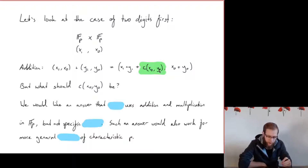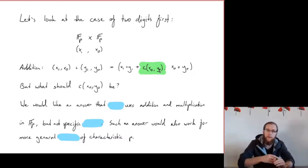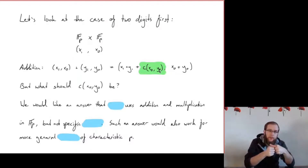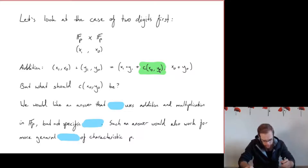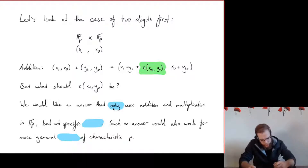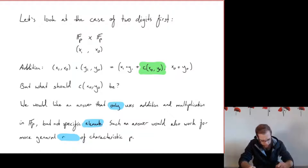Now what exactly should this carry be? Because we would also want to apply this to other rings than Fp, we cannot really use specific knowledge about Fp — we're not really allowed to take representatives in the final result. We want to come up with an end result that only uses the addition and multiplication in Fp and the universal elements 0 and 1, but not any specific elements. Such an answer would then also work for more general rings of characteristic p.